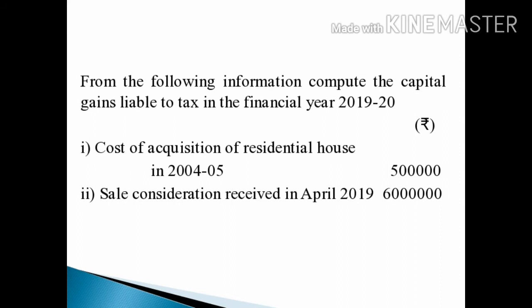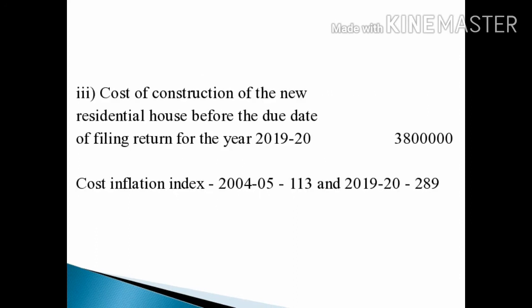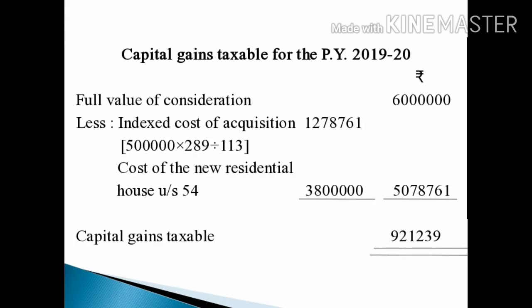The residential house was acquired in 2004-05 with a cost of acquisition of Rs. 5 lakhs. In April 2019, this residential house was sold and a sale consideration of Rs. 60 lakhs was received. Before the due date of filing the return for 2019-20, the cost of the new residential house constructed is Rs. 38 lakhs. The Cost Inflation Index for 2004-05 is 113 and for 2019-20 is 289. Since the house was acquired in 2004-05 and sold in April 2019, it is a Long Term Capital Asset.